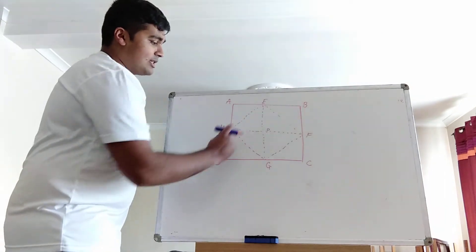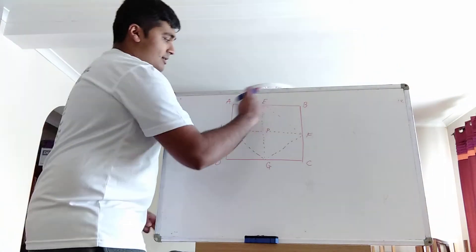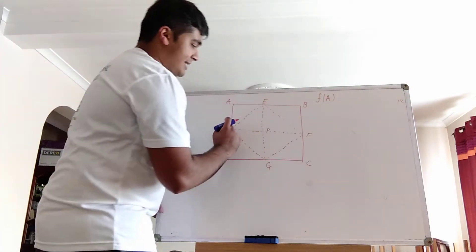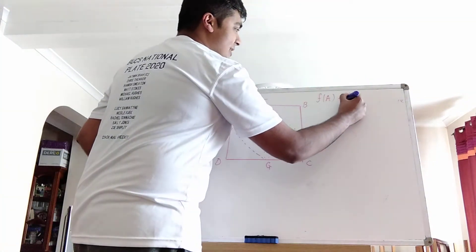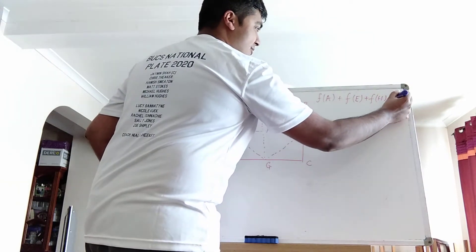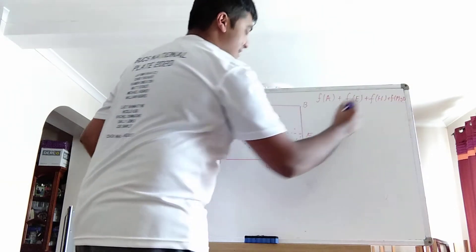So firstly, we'll look at these smaller squares. So this square here, we get f(a) + f(e) + f(h) + f(p) equals zero. I'm going to run out of room, and that equals zero. There we go.